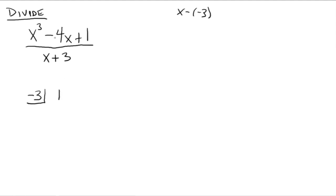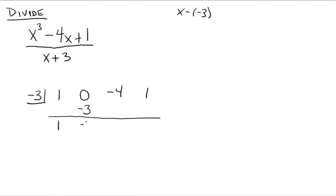So this would be 1. Now notice we're missing x squared, so its coefficient is 0. We need to put the 0 in because that keeps everything lined up nicely. Then we have negative 4, and then positive 1. Skip a line, draw a line. The first leading coefficient goes below the line, then multiply and add. Negative 3 times 1 gives you negative 3 — add them up, get negative 3. Then negative 3 times negative 3 gives you 9 — add them up, you get 5. Then negative 3 times 5 gives you negative 15, and negative 14 is the remainder.